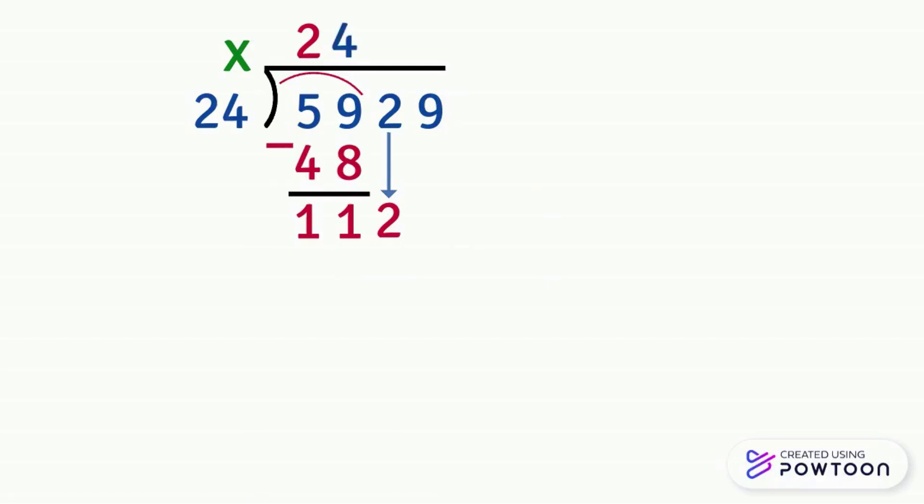So we multiply 24 by 4. 4 times 4 equals 16. We write 6 and we carry 1. 4 times 2 equals 8. 8 plus 1 is 9. So 24 times 4 equals 96.